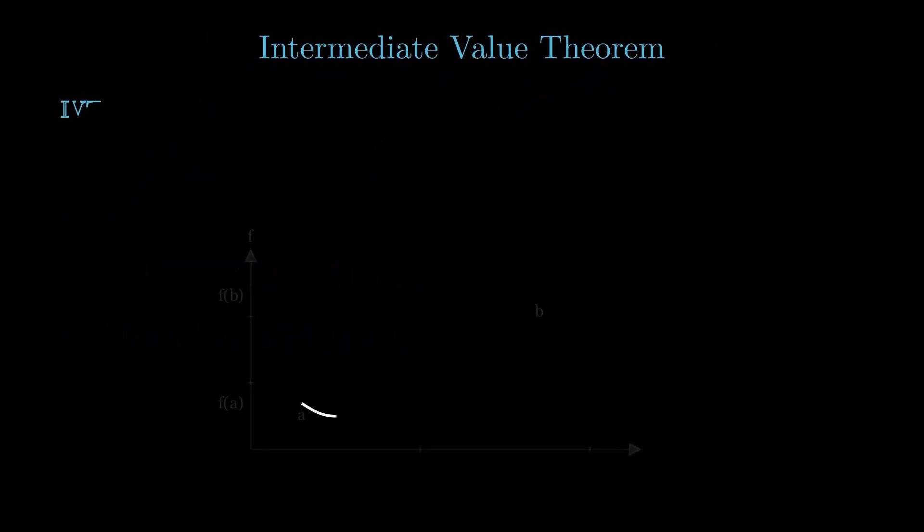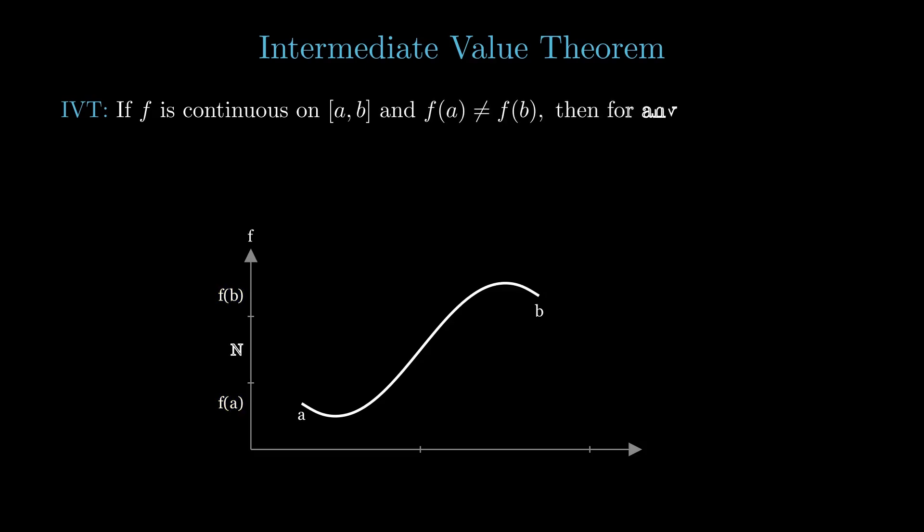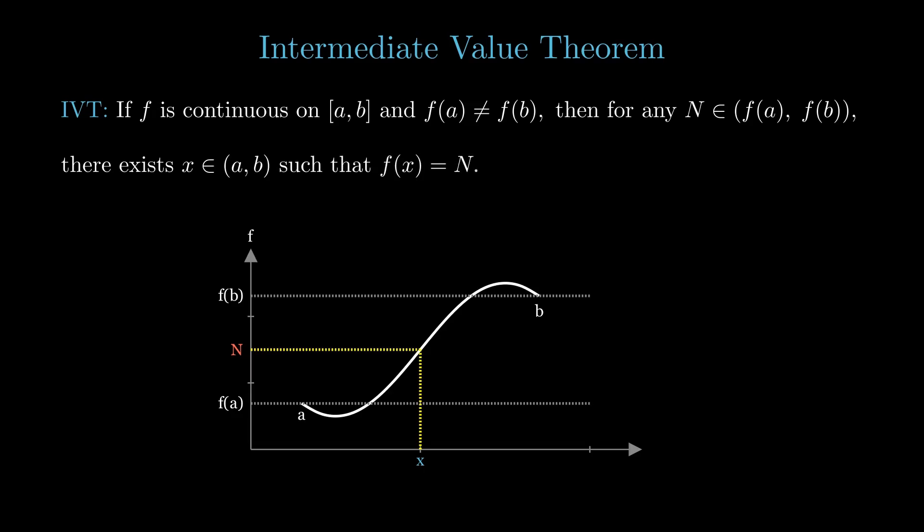So let's start by looking at the Intermediate Value Theorem. This theorem states that on a continuous closed interval—this must be a condition that is met, it must be continuous—all we're saying is that all the function values in between the two function values of the endpoints must exist, must be hit. So if it goes from 1 to 3, every possible number between 1 and 3 must be hit. Very intuitive.